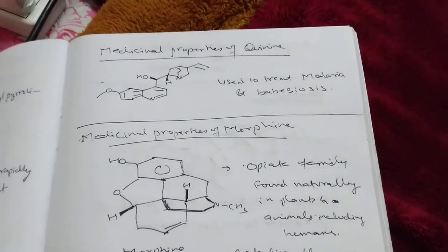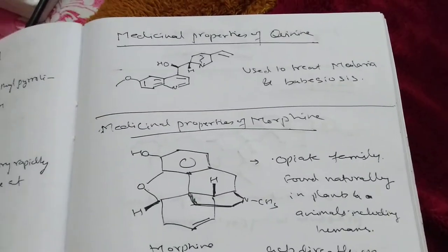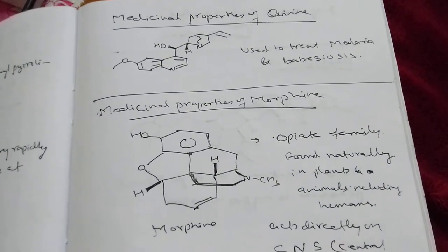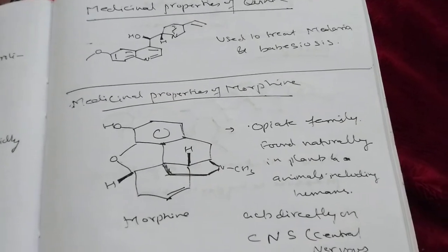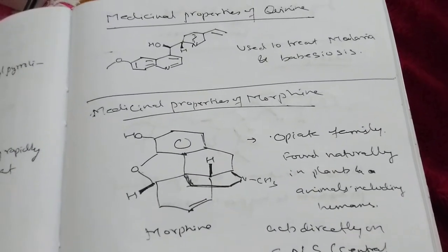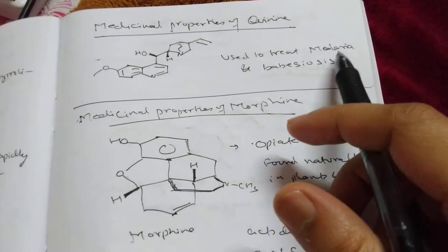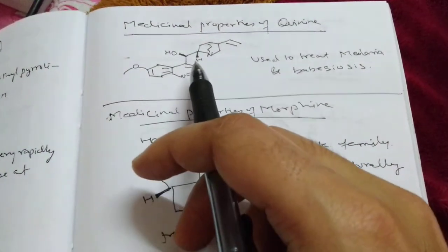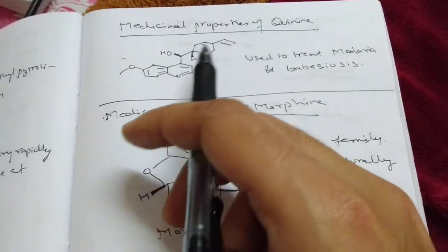We need to know few medicinal properties. First one is quinine, you know a lot of news is there, quinine chloroquine, this was used for malaria. It is taken from cinchona plant, used for treatment of malaria and babiosis. You should have some idea what it is used for.